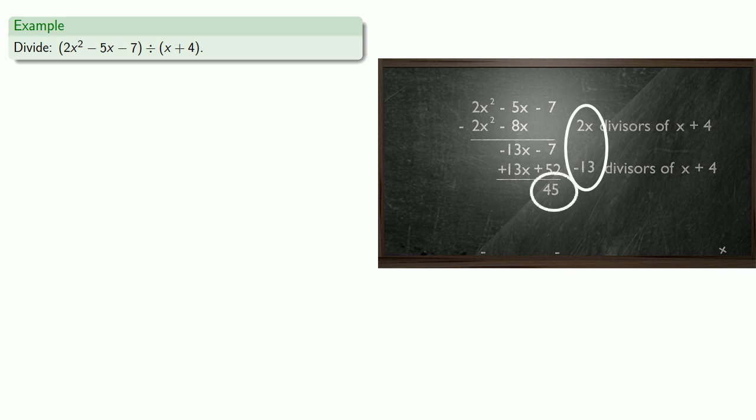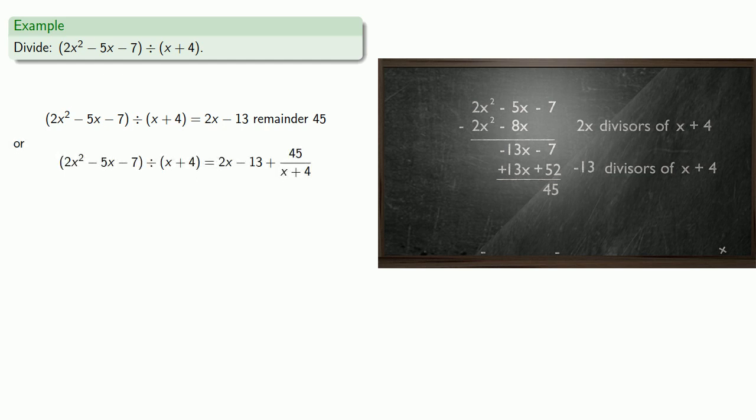So we can say our quotient is 2x minus 13 with the remainder of 45. Or we can write it in fraction form, 2x minus 13 plus 45 over x plus 4. The important thing to recognize here is you can use the preceding approach to find any polynomial quotient. And conversely, every algorithm for dividing is just a reorganization of the preceding work. We'll take a closer look at that process in the next video.